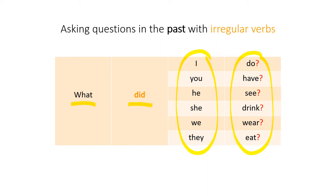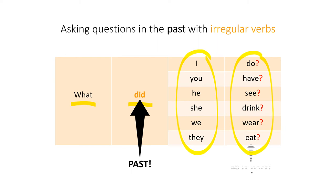What can you see here? We have did, which is in the past, which means remember, the other verb is not in the past. This is just for the question. What did you see? What did we wear? What did they eat?